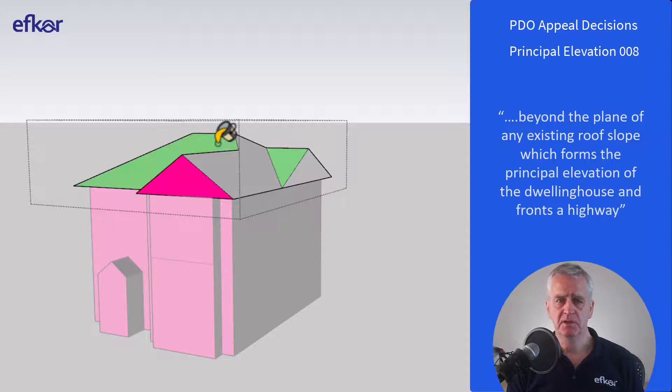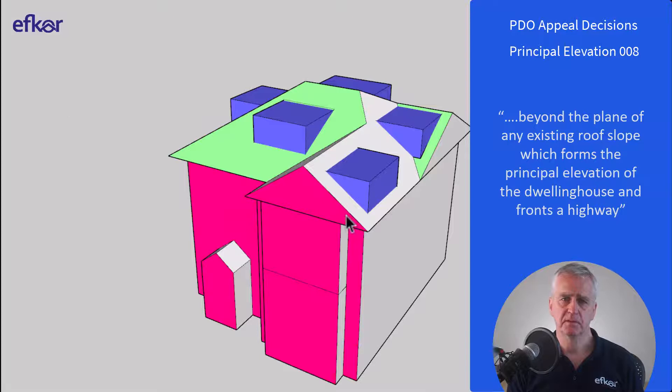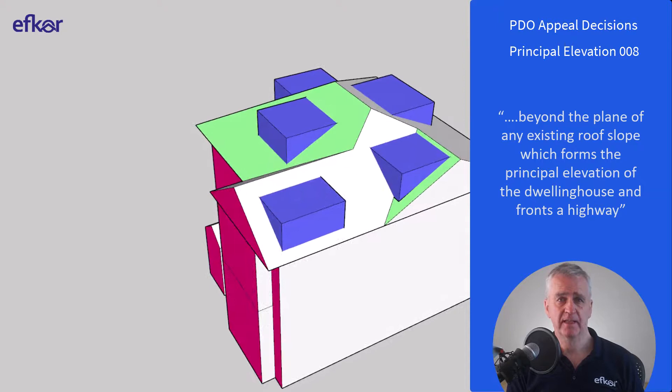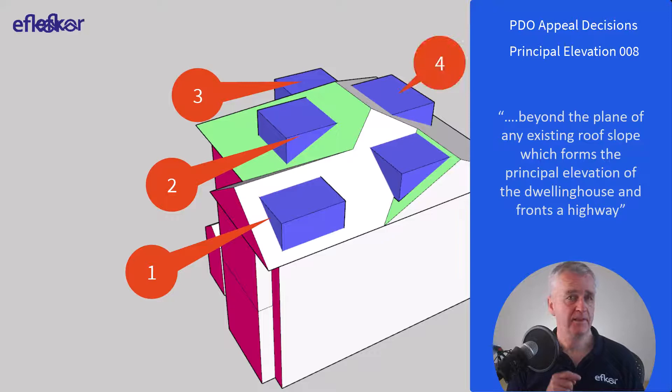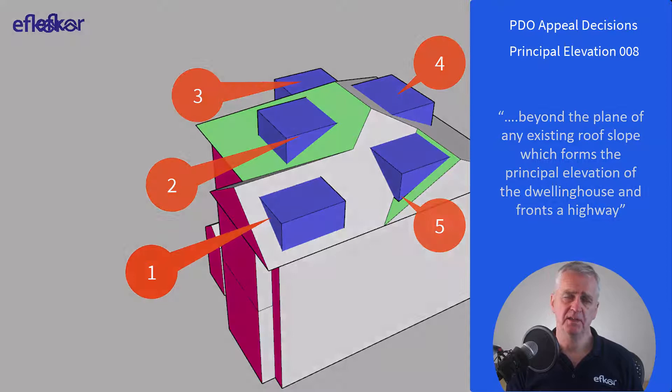Let's add some dormer windows. Which of these would be allowable under permitted development do you think? Answers are welcomed in the comments below. If you're not too sure, there's a clue in the last example in this video.